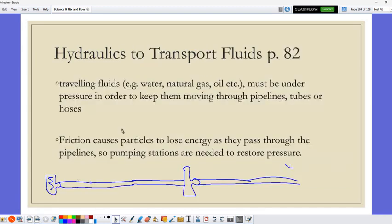We also use hydraulics to transport fluids. Natural gas, oil, water moves through pipelines. The pipelines have to have as few bends in them as possible, but there is friction inside the pipeline. We'll have these pumping stations to restore the pressure all the way along. You can add different fluids to mix with crude oil so it'll flow better, and then you can take those fluids back out when they get to the refining.